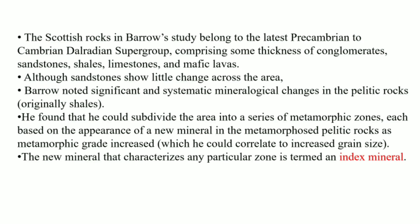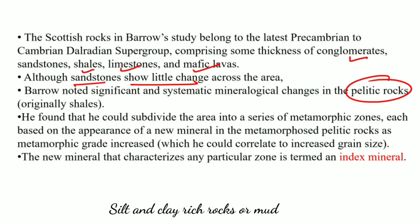Now let's talk about the rocks that were present in the study area of George Barrow. There were many sandstones, conglomerates, shales, limestone, and mafic lavas. George Barrow saw little changes in the sandstone, but he noted most of the changes in the pelitic rocks — rocks which include silt and clay, such as siltstone, claystone, and mudstone. He could subdivide the area into a series of metamorphic zones, each zone named on the basis of the appearance of a new mineral with the increase in grade. Every new mineral that appeared was named an index mineral.